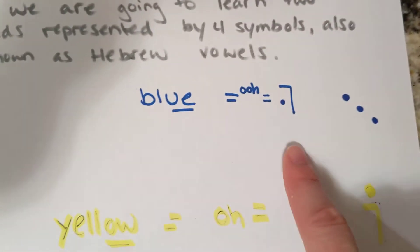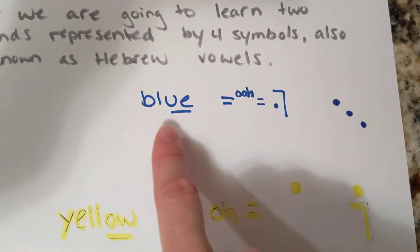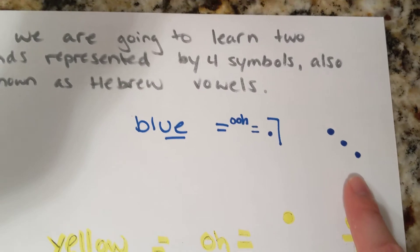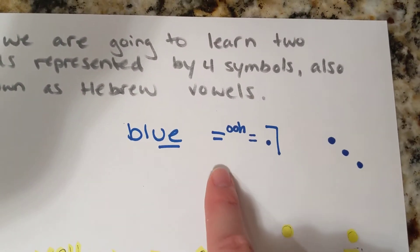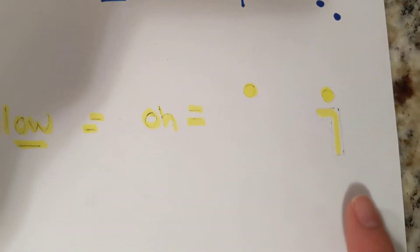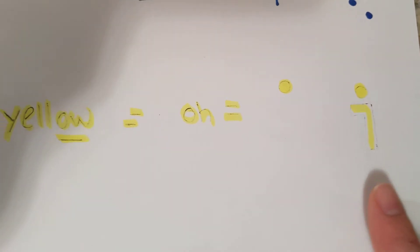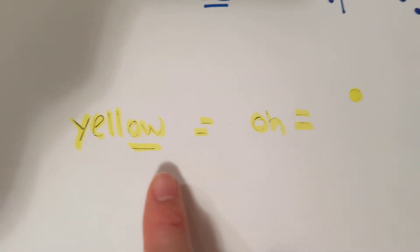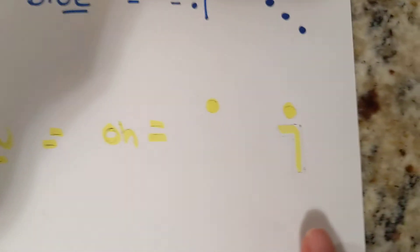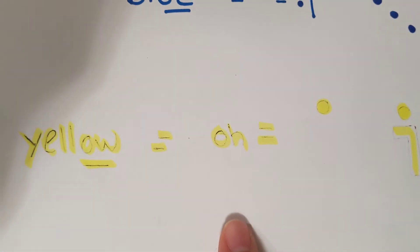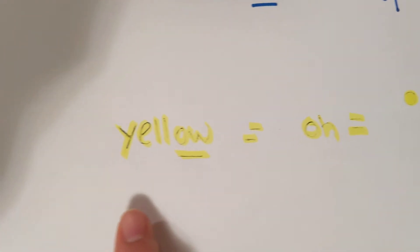So we have oo, oo as in blue. Say it with me: oo, oo as in blue. And then we have oo, oo as in yellow. Say it with me: oo, oo as in yellow.